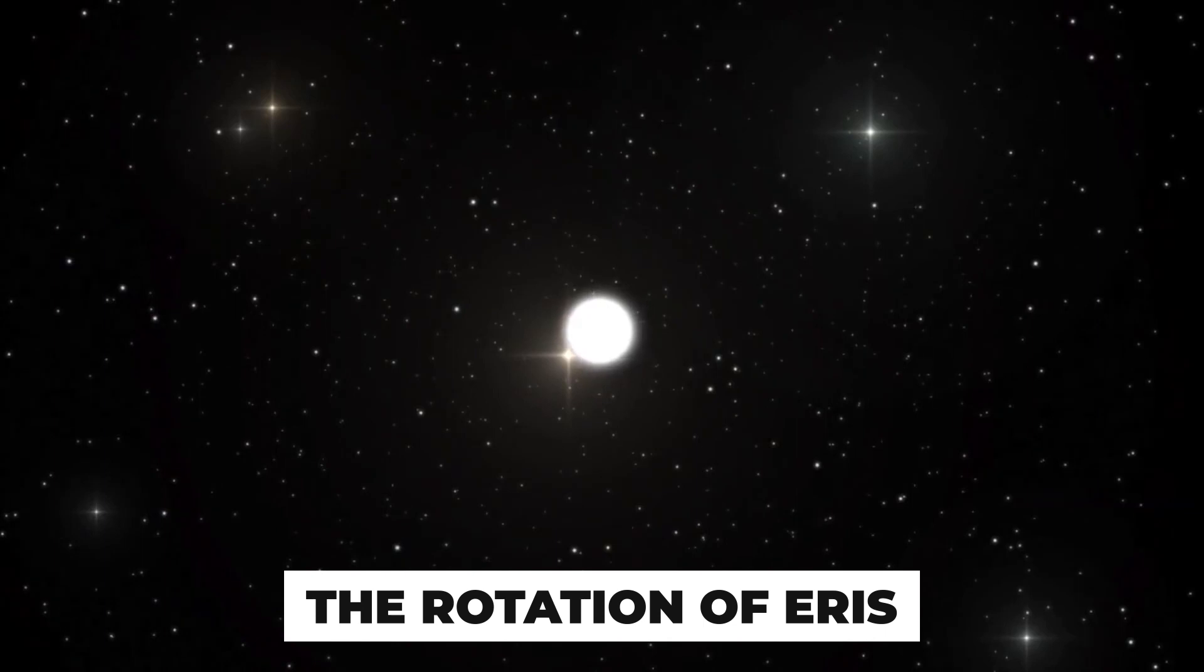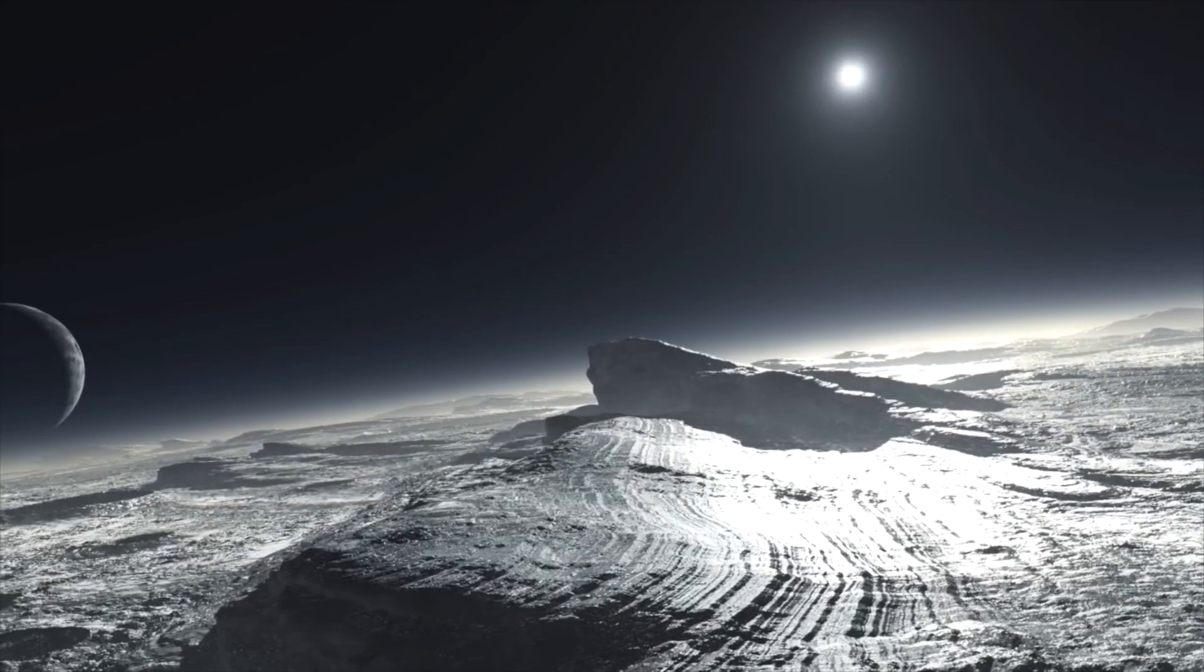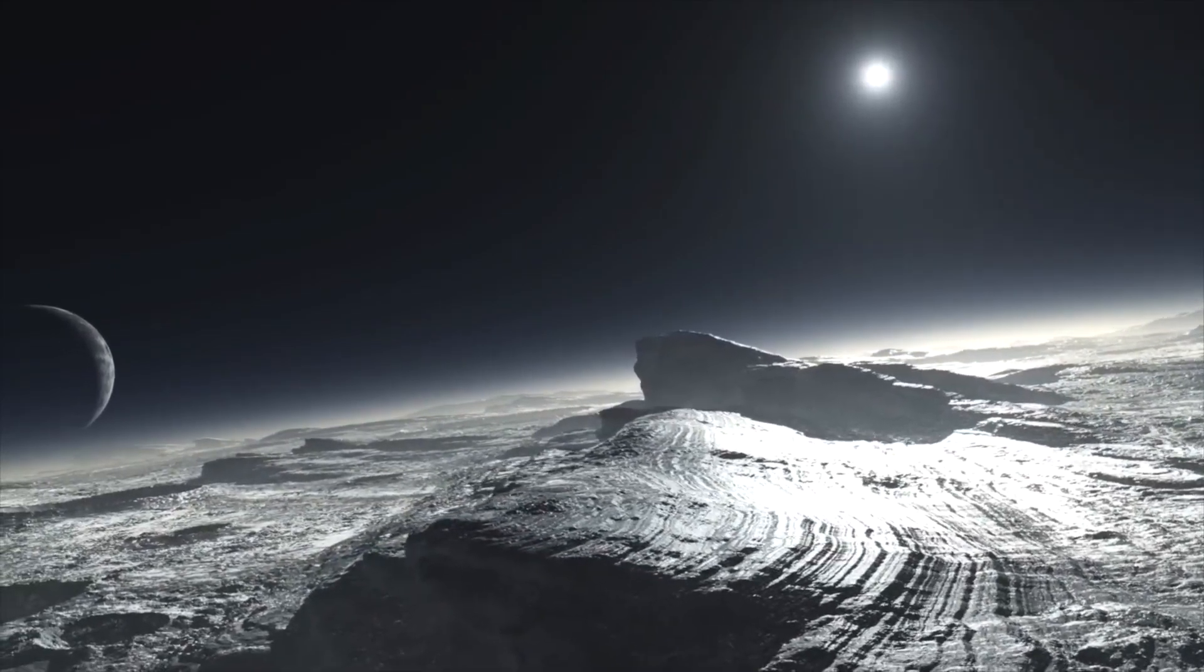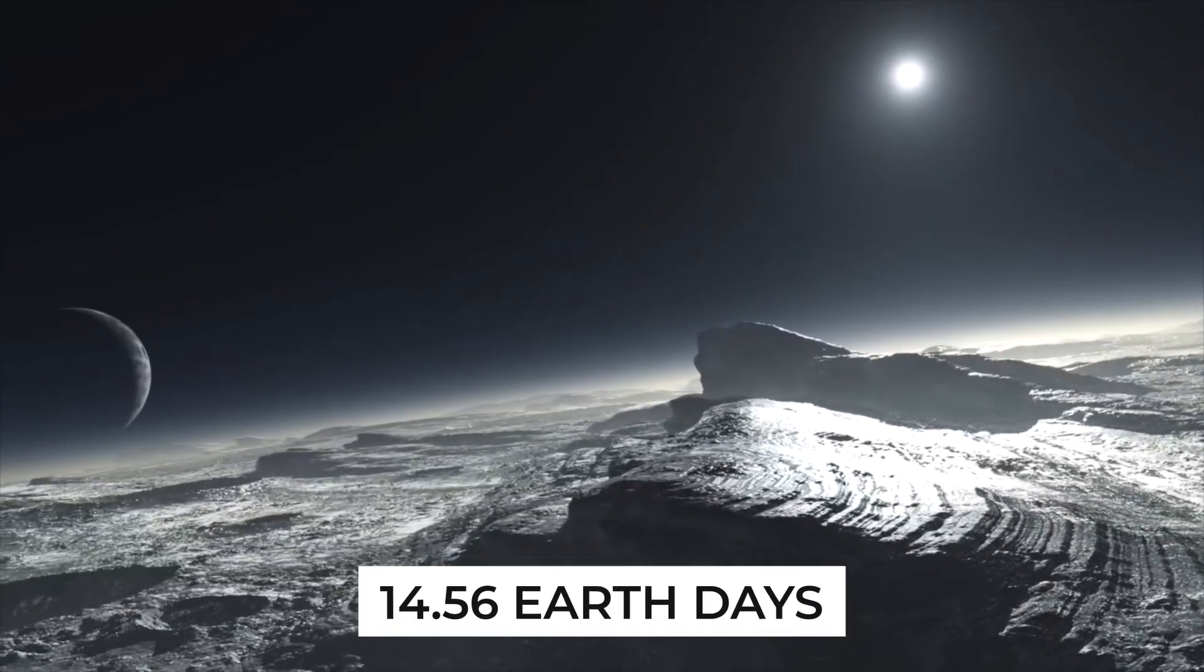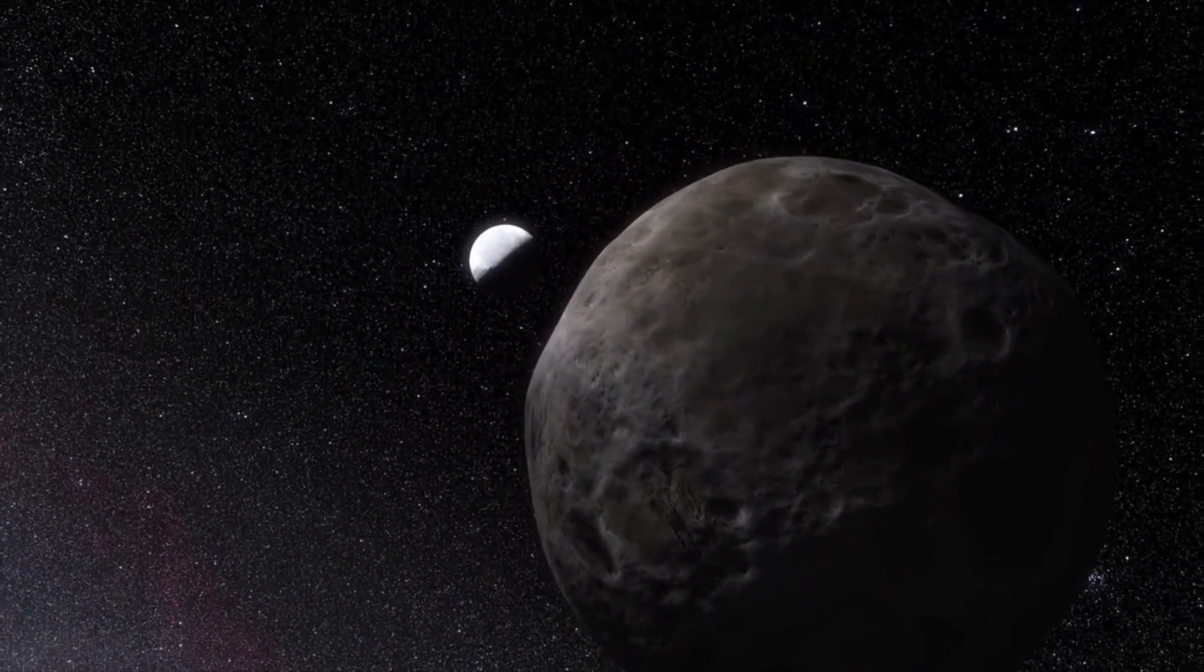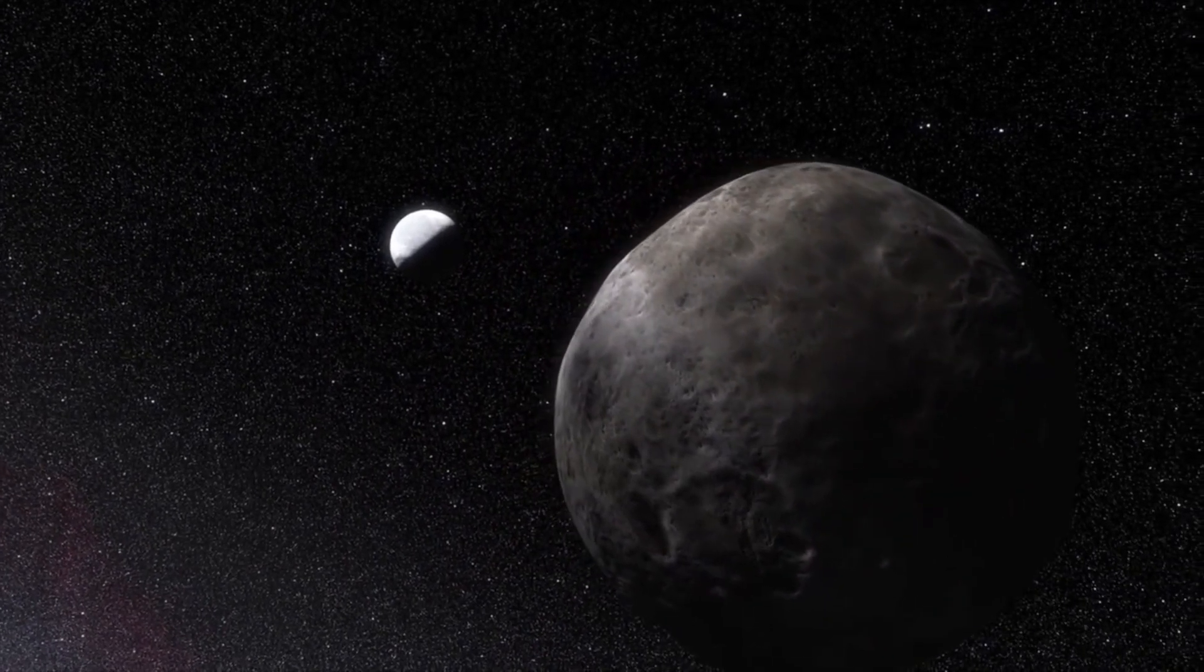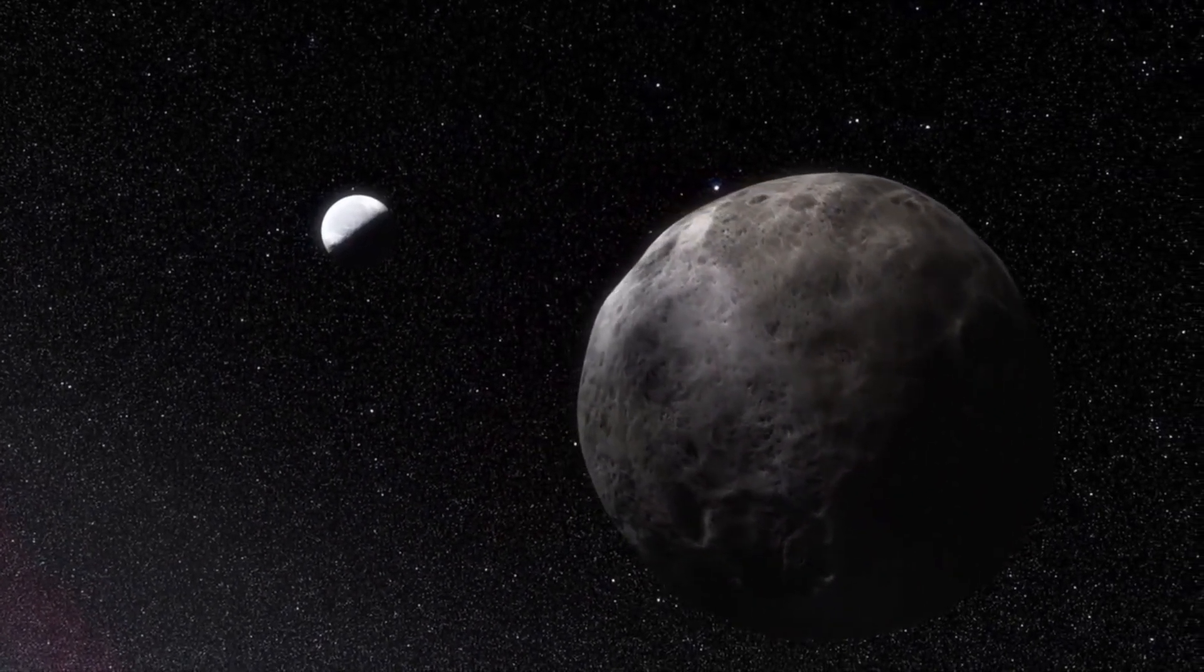The rotation time of Eris is hard to determine because its brightness seldom changes as it spins. By 2020, long-term observations of Eris's luminosity provided a reliable estimate of its rotation period, which is approximately 14.56 Earth days. Due to poor long-term analysis of Eris's rotation, previous estimations of its rotation period obtained extremely imprecise numbers varying tens of hours.